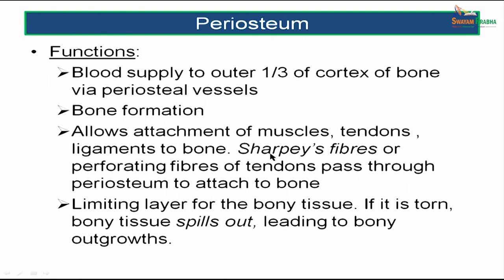Special mention about Sharpey's fibers or perforating fibers of tendons — these fibers pass through the periosteum and attach to the bone. Periosteum also forms a limiting layer for bony tissue. If this layer is torn or disrupted, the bony tissue grows out, leading to bony outgrowths.